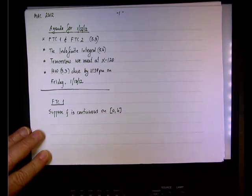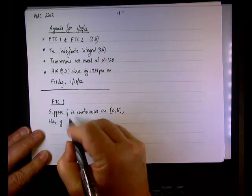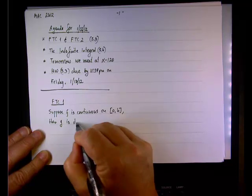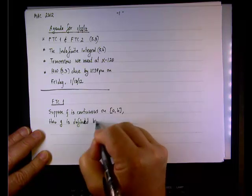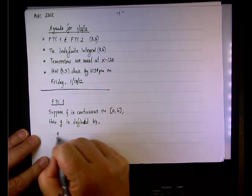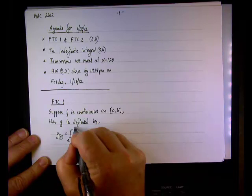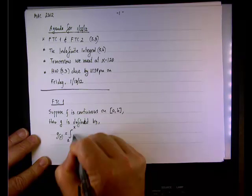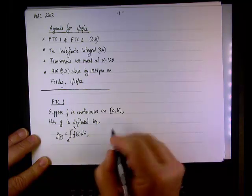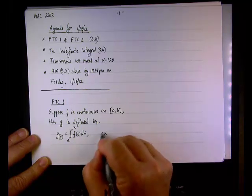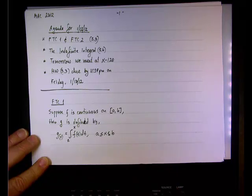Then we define a function, another function g, in the following manner. So g is defined by, and we'll write g of x will be the integral from a to x of f of t dt, where x is a value inside the closed interval a, b, like so.